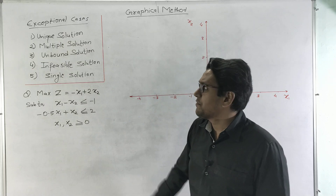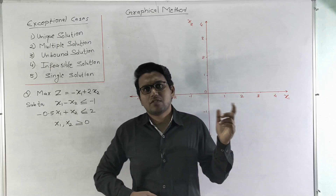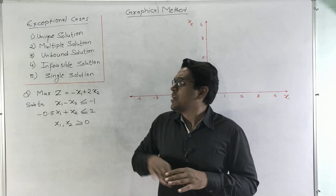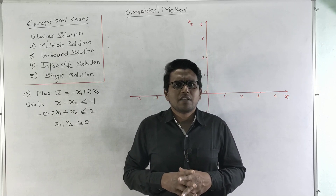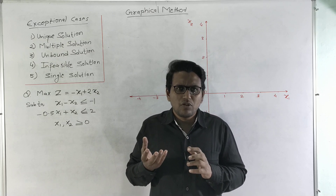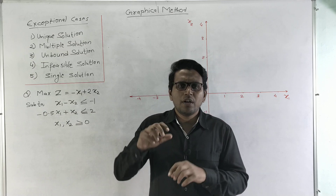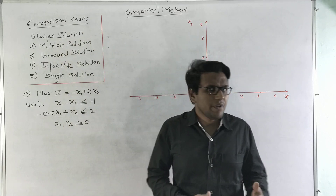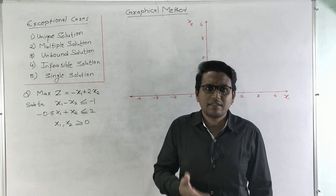The first exception case is the unique solution, which we have already done in previous lectures. In this particular type, there are a number of feasible solutions and among them we select the best possible solution, or optimal solution. That is the unique solution type. Now we are going to solve a question first and then see which category it falls into.